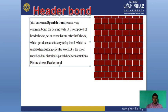We use header bond so that our wall remains straight, parallel, and solid. It is very useful for any circular work. As you can see in the figure, wherever we use these bricks in a wall — whether stretcher or header — the side that is shown is called header bond, which has been in use since the time of historical Spanish brick construction, as shown in the picture.